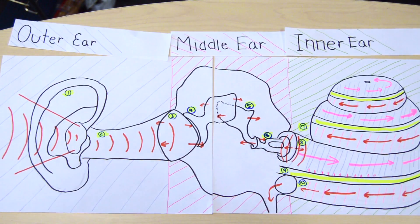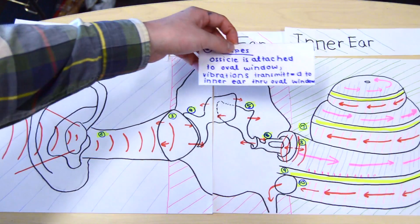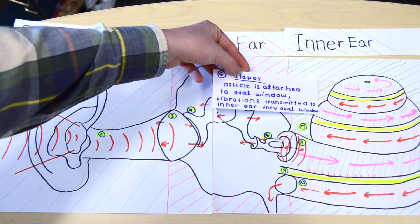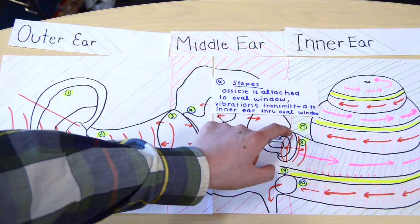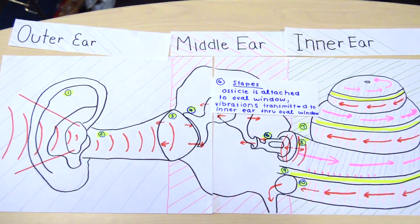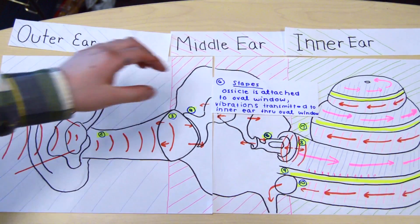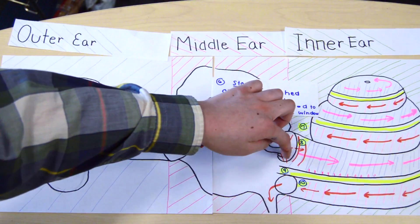In response to the incus vibrating, the stapes, which is an ossicle attached to the oval window, transmits the vibrations to the inner ear through the oval window.